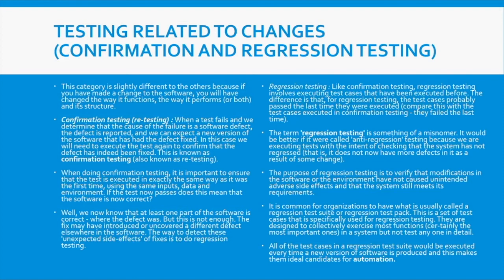When doing confirmation testing, you must use the same test case, the same test data, the same steps, the same input, and the same environment you used before to discover that bug. You want to ascertain that the particular bug has been fixed by going through exactly the same process as before.